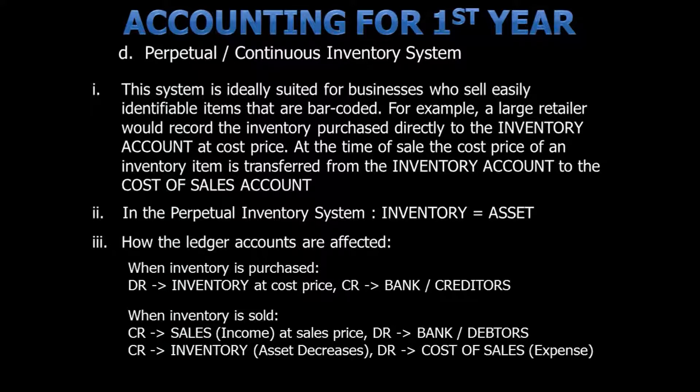This system is ideally suited for businesses who sell easily identifiable items that are barcoded. For example, a large retailer would record the inventory purchased directly to the inventory account at cost. At the time of sale, the cost price of an inventory item is transferred from the inventory account to the cost of sales account. In the perpetual inventory system, inventory is seen as an asset.